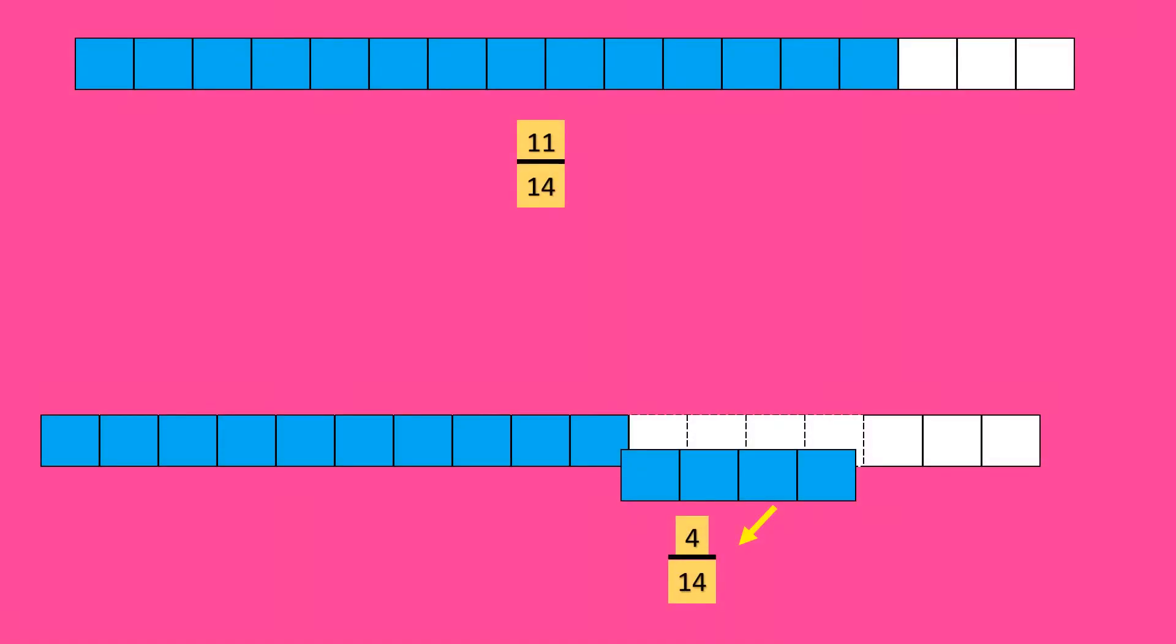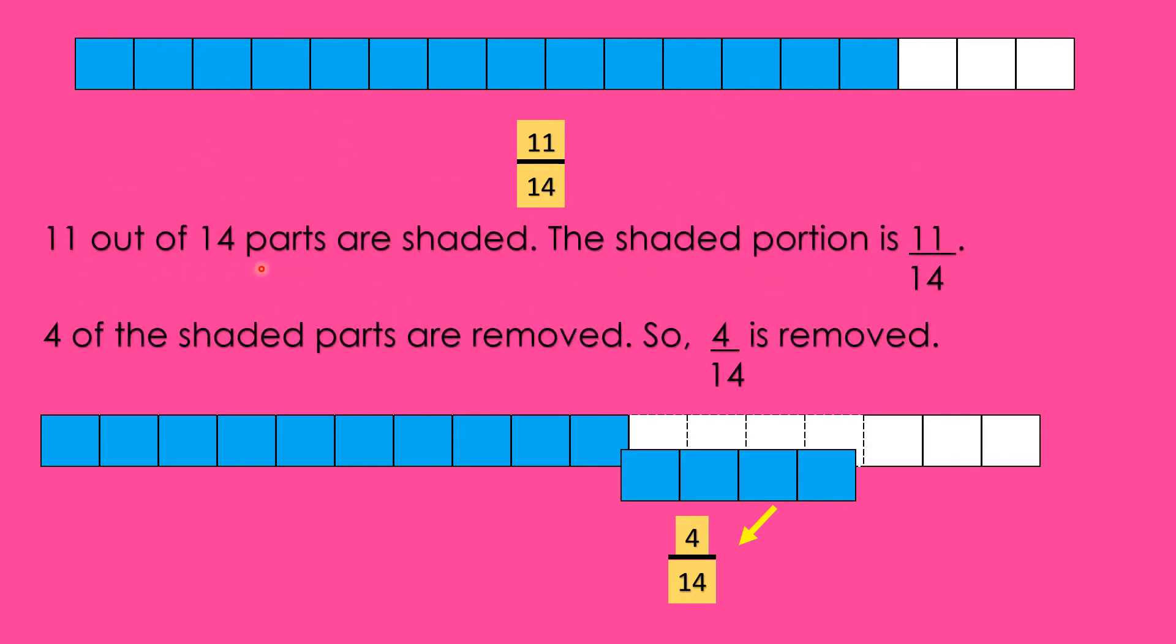Let's subtract them. Look at this fraction. 11 out of 14 parts are shaded. The shaded portion is 11 fourteenths. Students, what is this fraction? 11 fourteenths. Now, 4 of the shaded parts are removed.